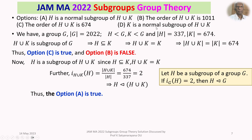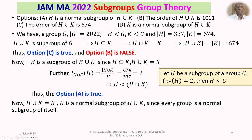What is left is Option D: K is a normal subgroup of H union K. This is true. Why? Because H union K is K. So K is a normal subgroup of H union K means K is a normal subgroup of K itself. Every group is a normal subgroup of itself, so this is true. Therefore Option D is true.